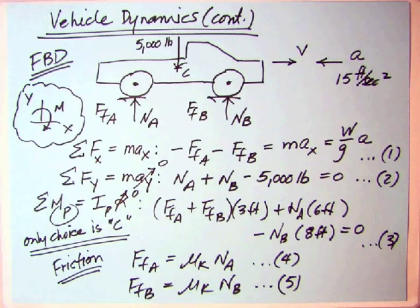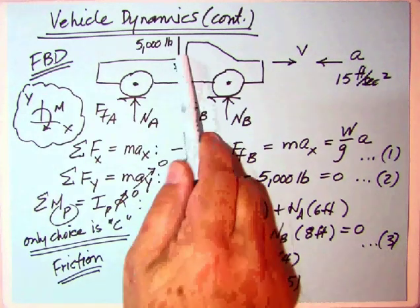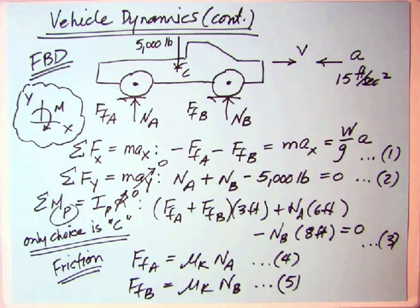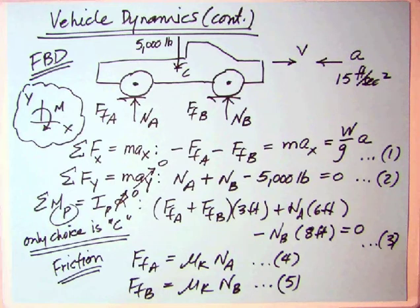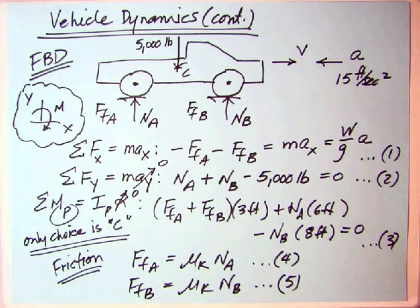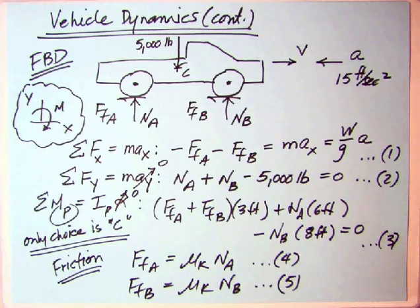We drew the following free body diagram: the weight of 5,000 pounds, the two normal forces, and the two friction forces. But what is missing here — that is on the free body diagram in the MERM — is this inertia force MA. It appears to be in the opposite direction you might think about it, so that's where we're going to go.